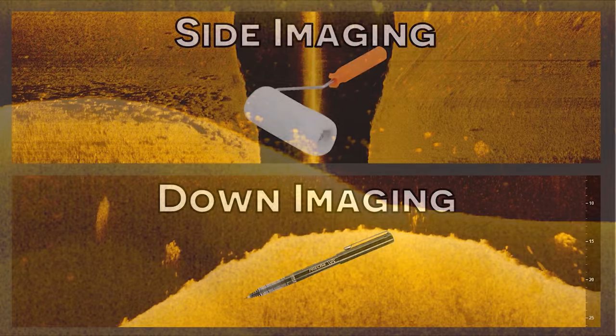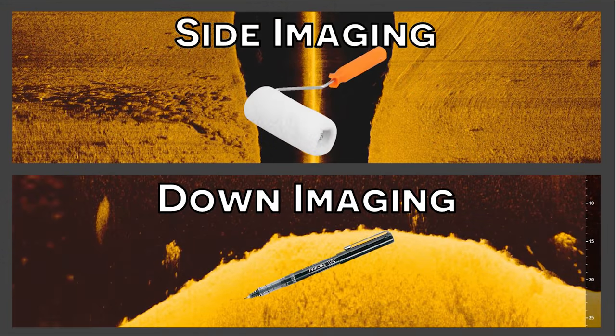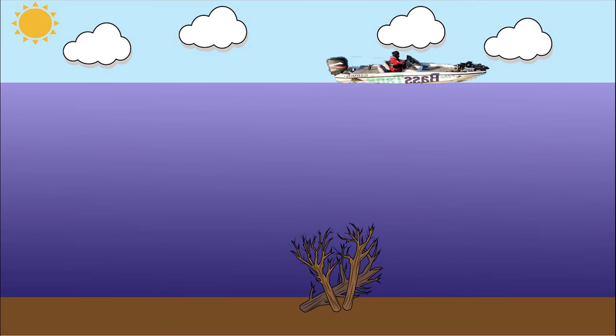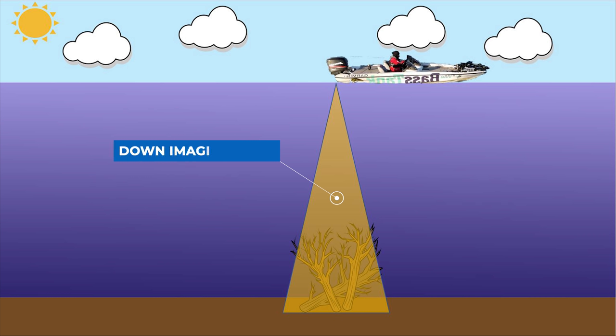If side imaging is the paint roller, down imaging is the pen. With down imaging, you're scanning a lot smaller area — basically the water directly below the transducer on your boat. This means that the bass are going to be a lot easier to detect because, relative to the area that you're scanning, the bass are going to be pretty big. This allows you to scan over an area with your down imaging and clearly identify individual fish.